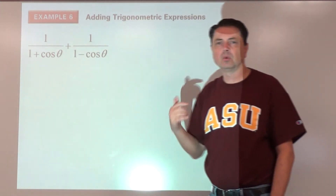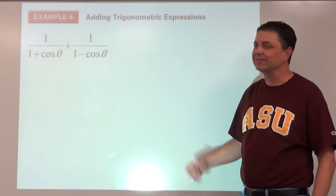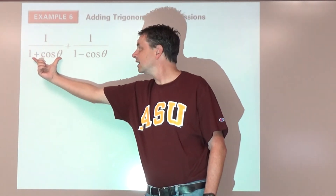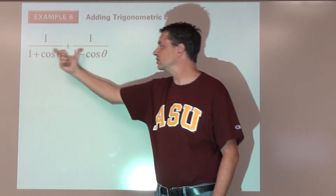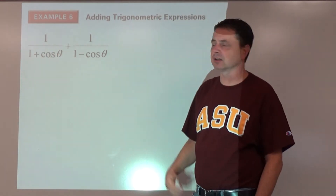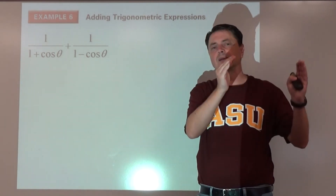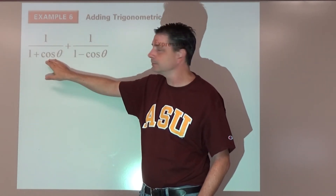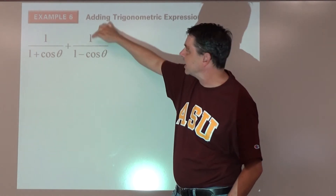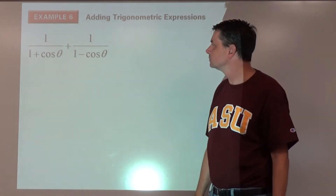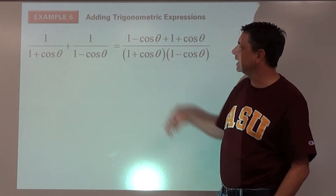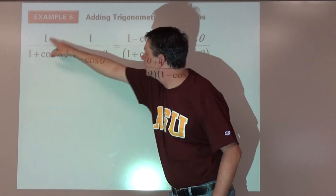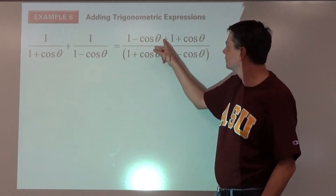We need a common denominator. The LCD is one plus cosine theta times one minus cosine theta — combining both denominators as separate factors. The first fraction is missing one minus cosine theta, so we multiply top and bottom by it. The second fraction is missing one plus cosine theta, so we multiply top and bottom by that.